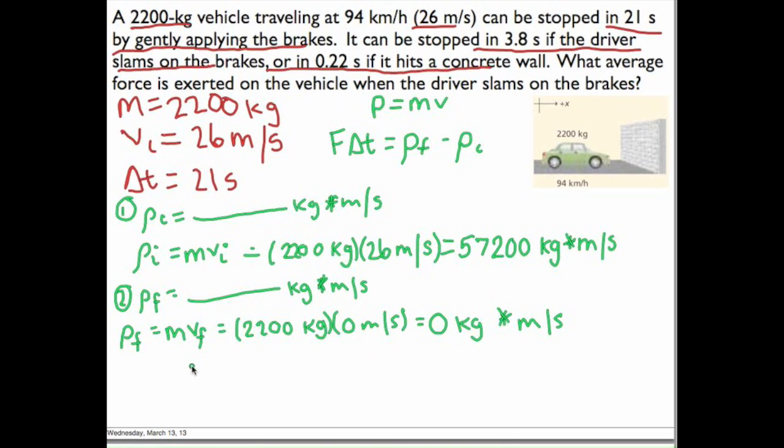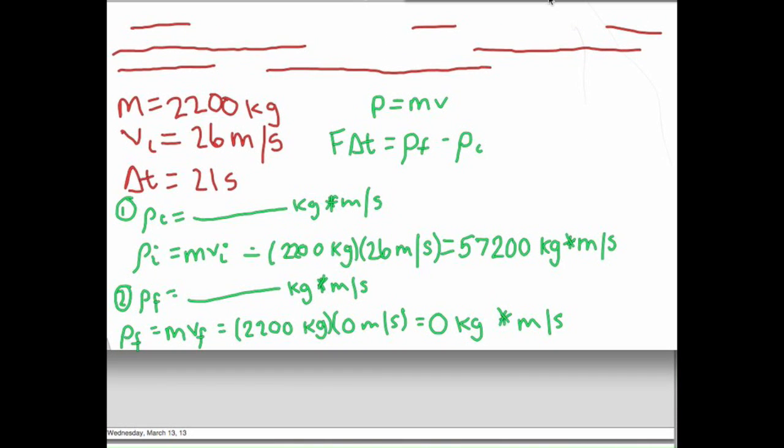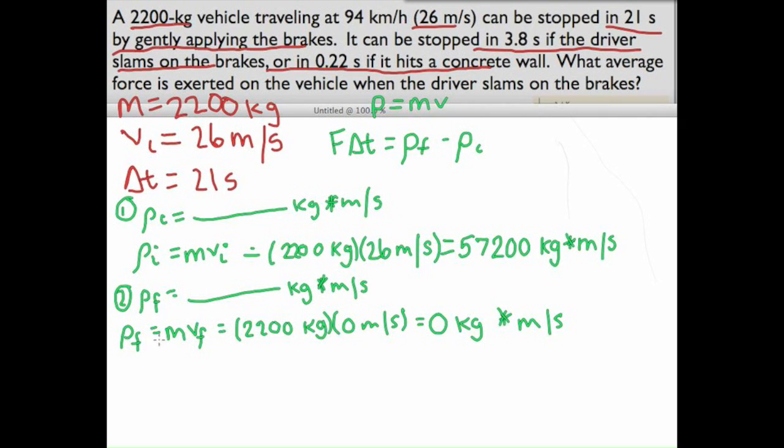Now that we've got that, we can use our impulse momentum theorem. So we're going to use our impulse momentum theorem. We'll have our force times change in time is equal to final minus initial momentum. So we can take both sides, divide them by the change in time.